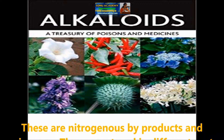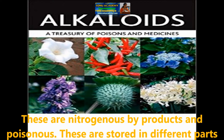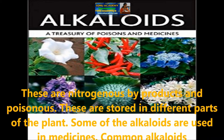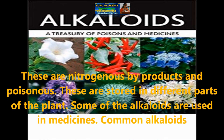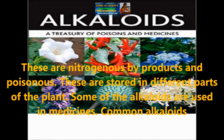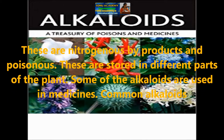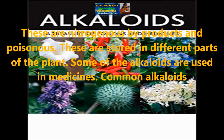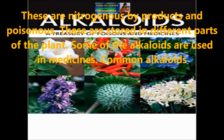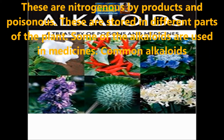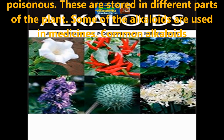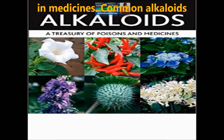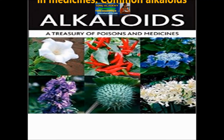Let us see what alkaloids are. Alkaloids are nitrogenous by-products and are poisonous. They are stored in different parts of the plant. Some alkaloids are used in medicines. Let us look at common alkaloids, the plants they come from, and the plant parts in which they occur.